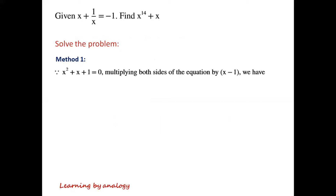Multiplying both sides of the equation x squared plus x plus 1 equals 0 by x minus 1, we have x minus 1 times x squared plus x plus 1 equals x minus 1 times 0.